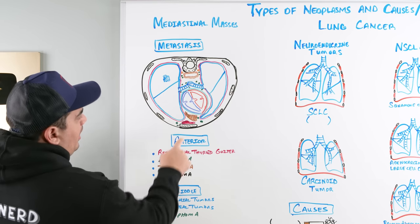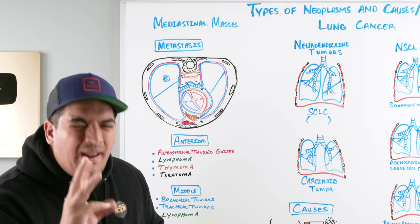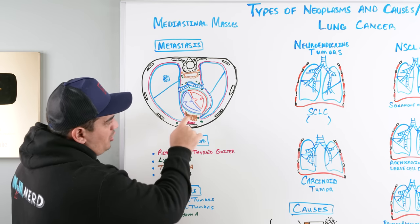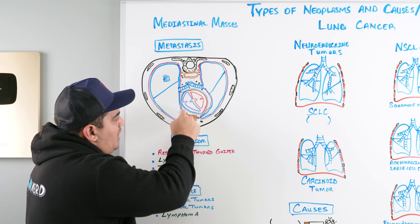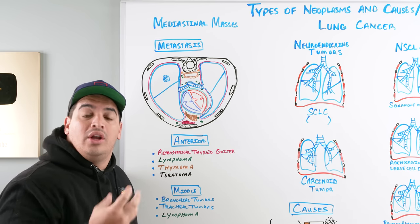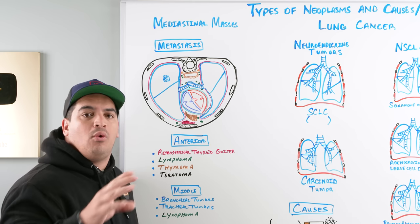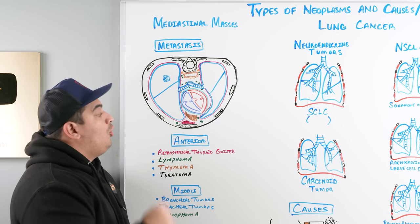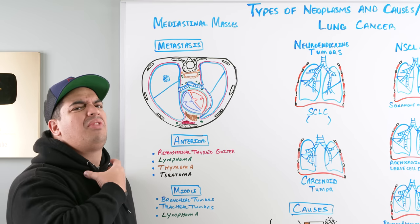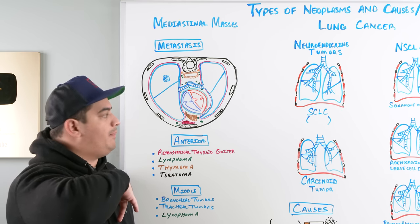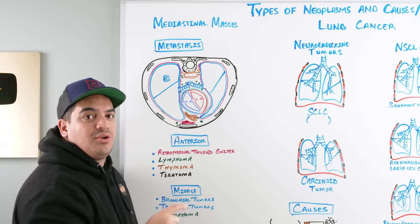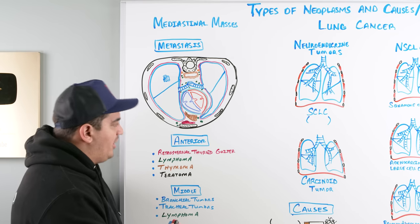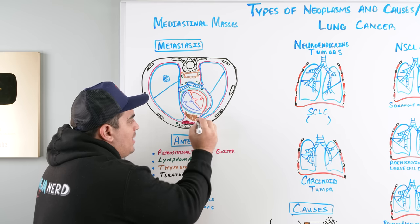Looking at a cross-section of the mediastinum, we have the right lung, left lung, vertebrae, and sternum. There are three main compartments. The anterior mediastinum runs from the sternum to the anterior portion of the pericardium. For masses in this region, remember the four T's: Thymoma, Terrible lymphoma, Retrosternal Thyroidal goiter, and Teratoma — germ cell tumors that can also appear in the anterior mediastinum.